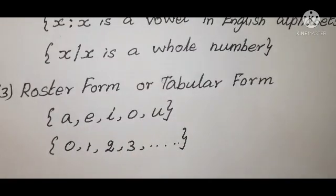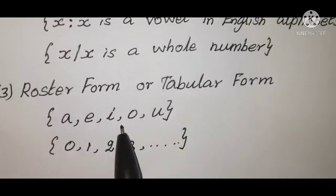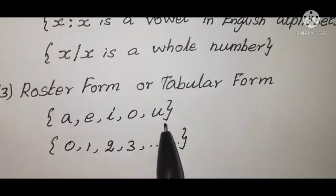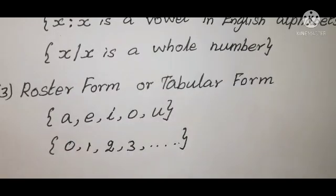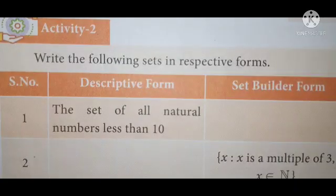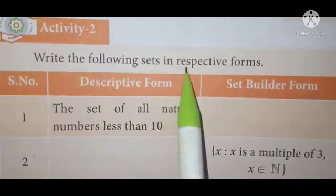The set of all vowels in English alphabet in roster form is written as {a, e, i, o, u}. The set of all whole numbers in roster form is written as {0, 1, 2, 3, ...}.